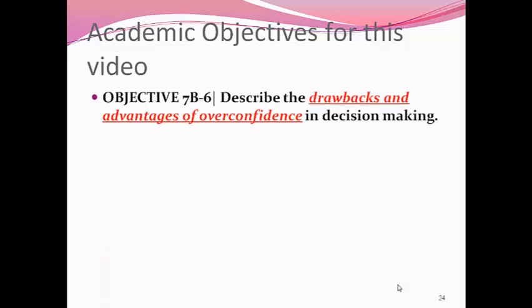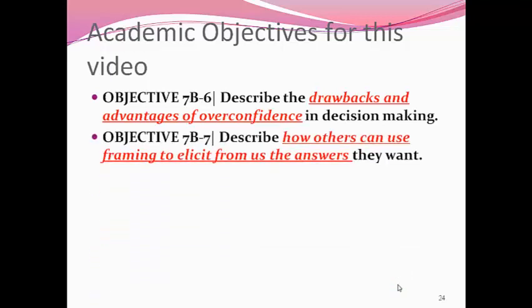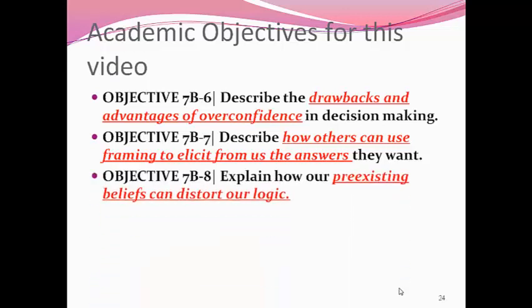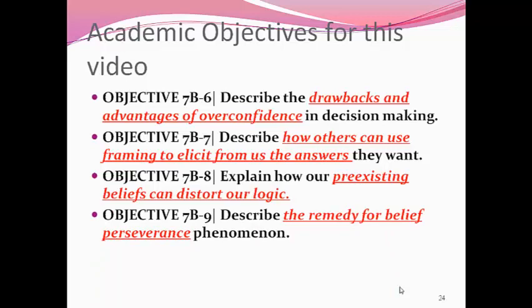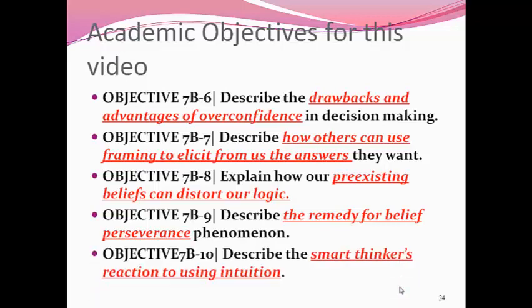Objective number one: describe drawbacks and advantages of overconfidence in your decision making. Next, be able to describe how others can use framing or wording in a question to elicit from us the answers that they want. Next, explain how pre-existing beliefs can distort our logical reasoning. Also, describe a remedy for belief perseverance — how can we fix that phenomenon? And lastly, describe how smart thinkers react to using intuition.